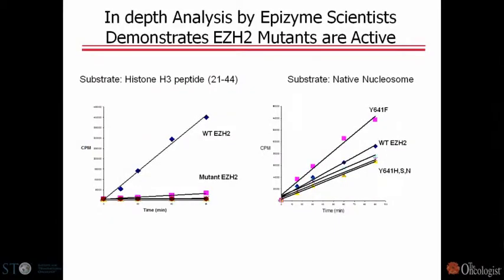The first thing we did was take the mutant enzymes and look at them against a peptide substrate, and we got exactly the same results as what was published—the wild-type enzyme was active and all of the mutants were essentially dead. We then did this against the physiological substrate, the whole nucleosome, and we got a very different answer: now all of the mutants are as active as the wild-type or more active.